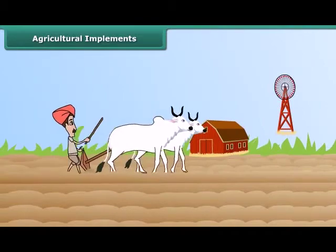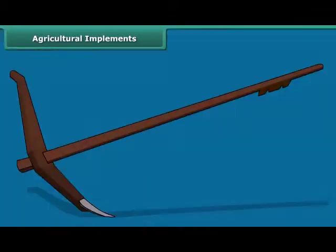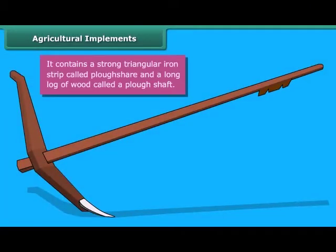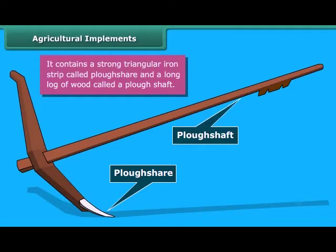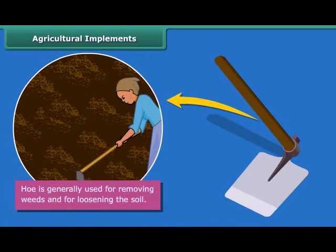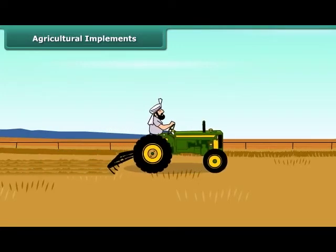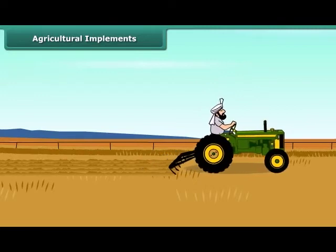Now look at this farmer — he is plowing the field with a plow made up of wood. It contains a strong triangular iron strip called a plowshare, and the main part of the plow is a long log of wood called the plow shaft. Another tool used in plowing is a hoe, used for removing weeds and loosening the soil. It has a long rod of wood and a strong, broad, bent plate of iron that works like a blade. Nowadays, plowing is done by a tractor-driven cultivator, which saves both labor and time.